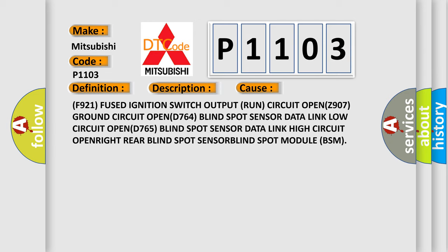Related circuits: F921 fused ignition switch output run circuit, Z907 ground circuit, D764 blind spot sensor data link low circuit, D765 blind spot sensor data link high circuit, right rear blind spot sensor.